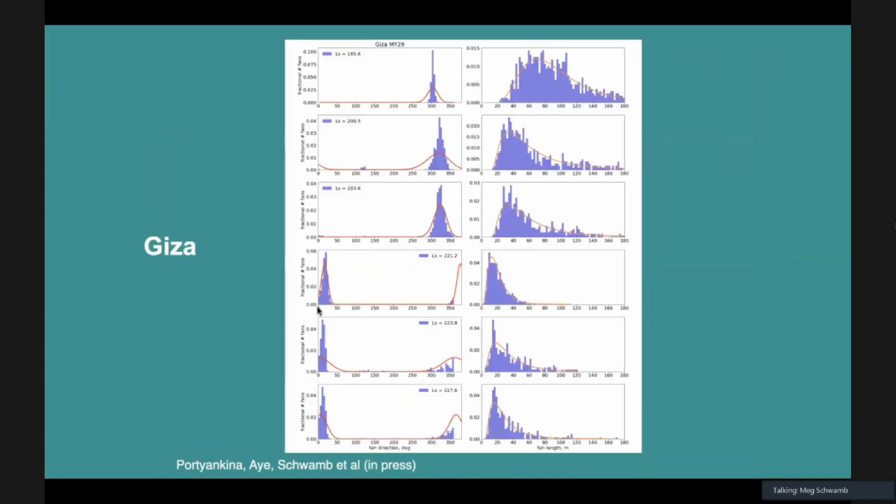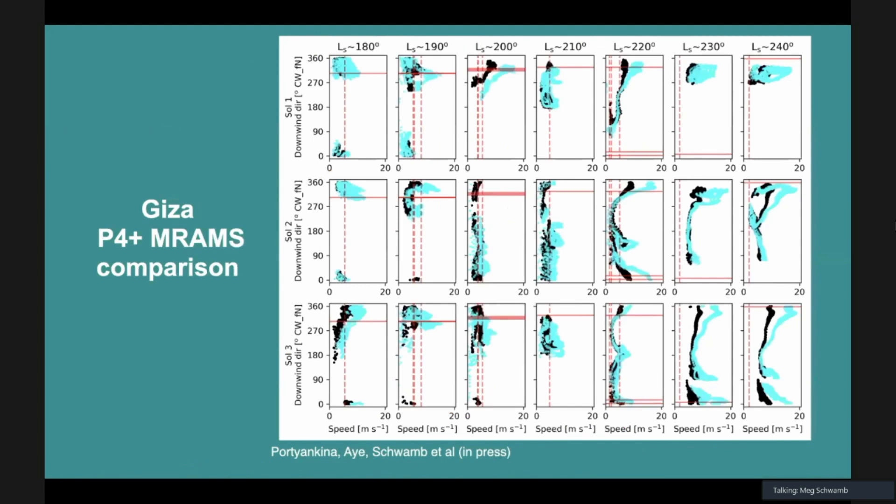I'll wrap up by showing a couple of results and then touch briefly on machine learning. What I want to highlight is that one of these regions called Giza, we see that the wind directions are clearly changing. We're seeing a little bit of what's going on as we go through the season, but we can compare that to the model. Here's showing three Mars days because the model is so complex, takes so long to run that even after weeks and weeks, we get three Martian sols.